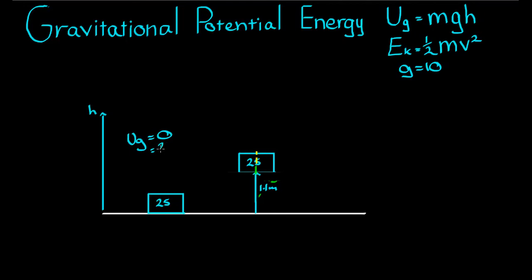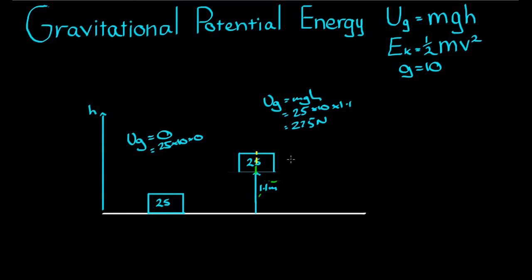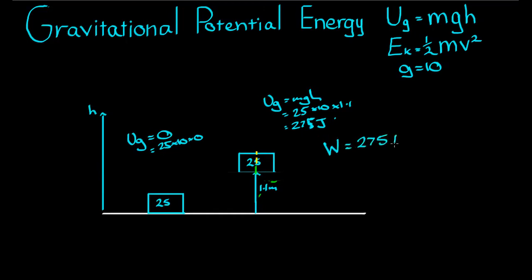So GPE at ground = M × G × 0 = 25 × 10 × 0 = 0. The gravitational potential energy of that TV once it's been lifted to 1.1 meters is MGH = 25 × 10 × 1.1 = 275 joules. Since we've given this television 275 joules worth of gravitational potential energy, the work we must have done on it is also equal to 275 joules.